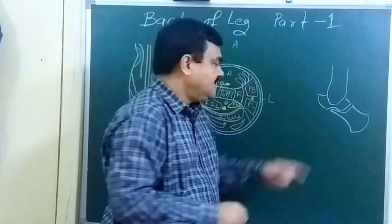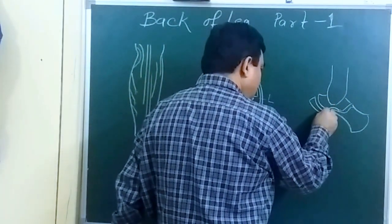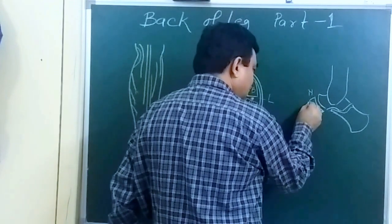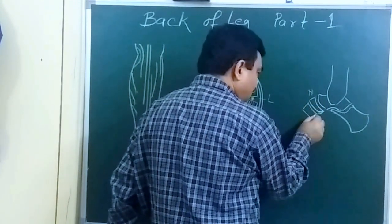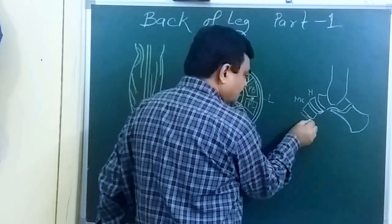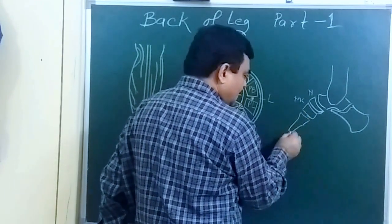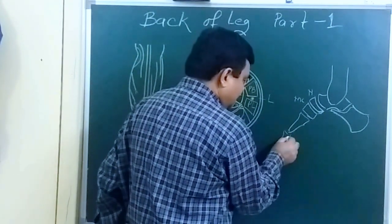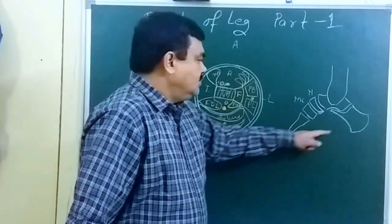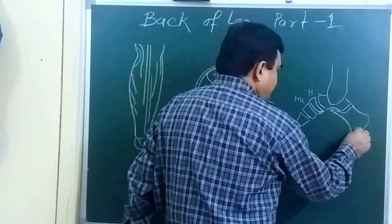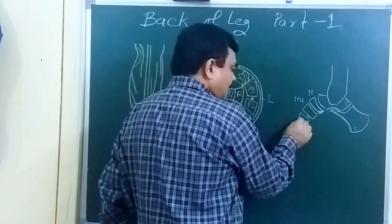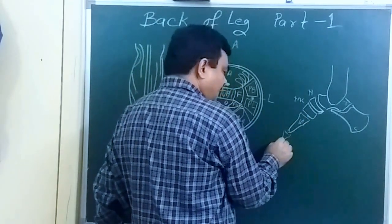This is the calcaneum, this is the talus, here is the navicular, this is the medial cuneiform, this is the first metatarsal, and here is the proximal and distal phalanx. So to summarize: calcaneum, talus, navicular, medial cuneiform, first metatarsal, proximal and distal phalanx.